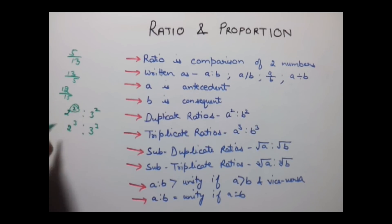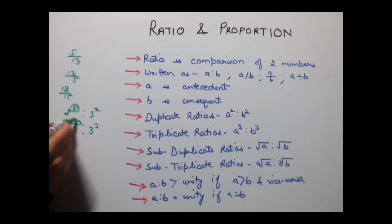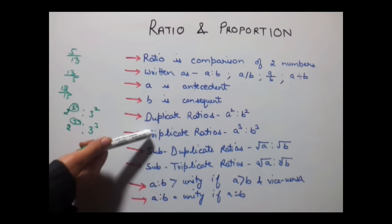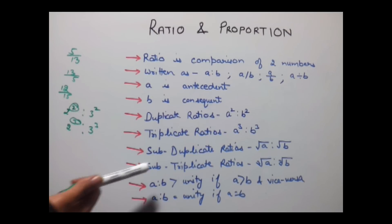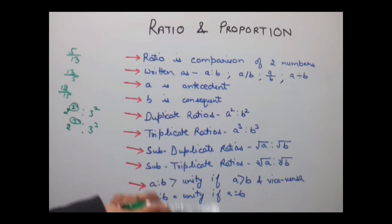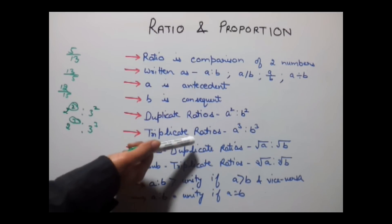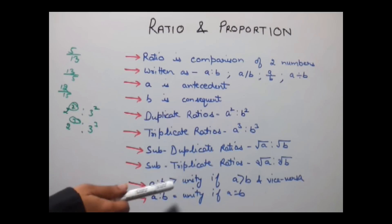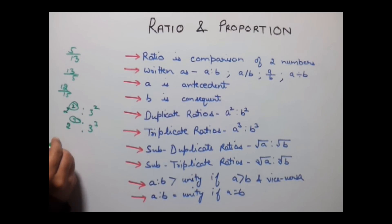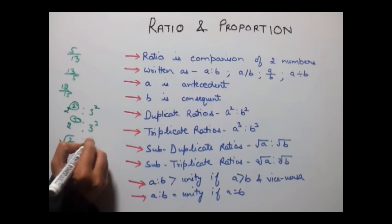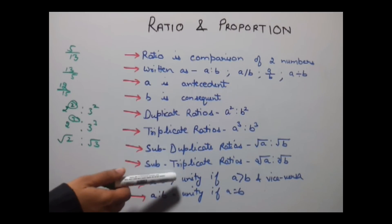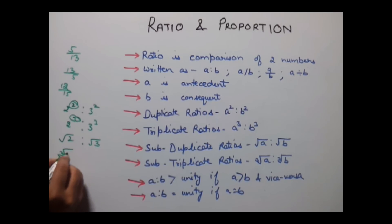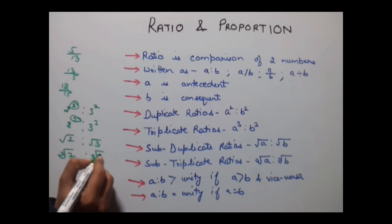So when the power is 2 it is a duplicate ratio, and when the power is 3 it is a triplicate ratio. In the same way, we have subduplicate and subtriplicate ratios. Subduplicate is the opposite of duplicate — it uses square roots, so subduplicate would be root 2 ratio root 3. Similarly, subtriplicate would use cube roots, such as cube root of A ratio cube root of B.